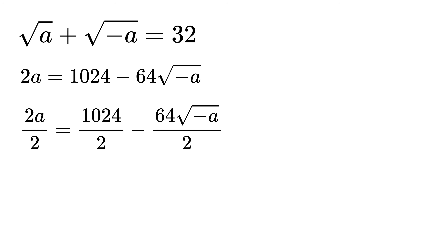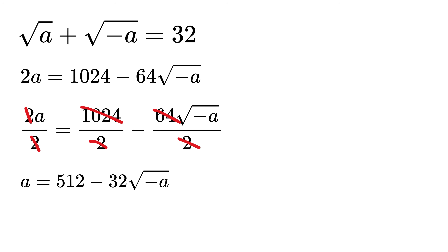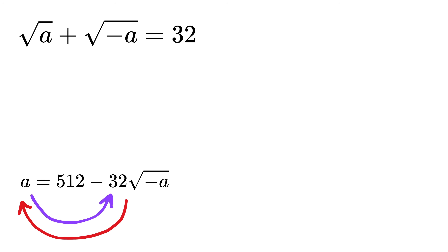Next, divide by 2 on both sides. This will become a. Now take the minus 32 times square root of minus a term and the a term to get 32 times the square root of minus a equals 512 minus a.